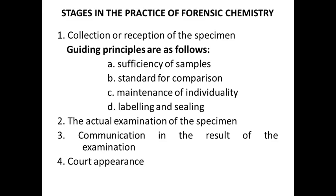What are the stages in the practice of forensic chemistry? Forensic chemistry observes strict adherence to principles and procedures in dealing with samples or evidence. First, in the collection or reception of the specimen, the guiding principles include: sufficiency of sample — meaning enough sample should be submitted, with it being better to have too much rather than a deficiency. Second, there must be a standard for comparison, since items obtained from the crime scene are considered as questioned, requiring something to compare against — for instance, a standard for what constitutes human blood.